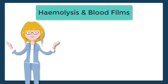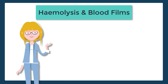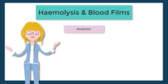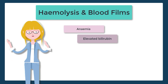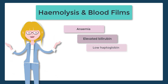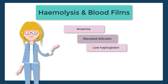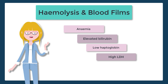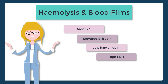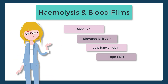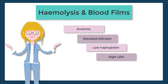When it comes to hemolysis, we suspect this when we see anemia accompanied by high bilirubin, reduced haptoglobin, and a high LDH. When we see this pattern, we'll then further explore this by requesting a blood film and a Coombs test.